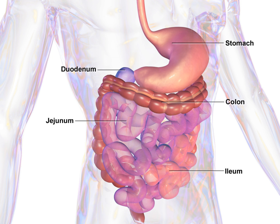The muscular layer consists of an inner circular layer and a longitudinal outer layer. The circular layer prevents food from traveling backward and the longitudinal layer shortens the tract. The layers are not truly longitudinal or circular; rather the layers of muscle are helical with different pitches. The inner circular is helical with a steep pitch and the outer longitudinal is helical with a much shallower pitch. The stomach has an additional inner oblique muscular layer to aid with grinding and mixing of food. Between the circular and longitudinal muscle layers is the myenteric plexus, which controls peristalsis.